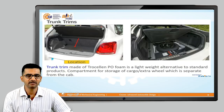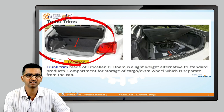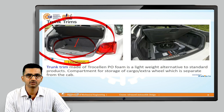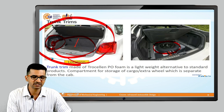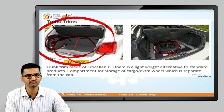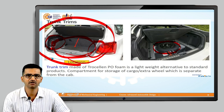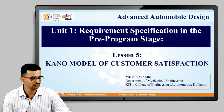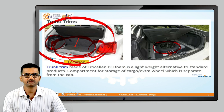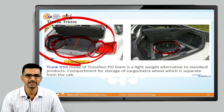Trunk trims cover the luggage opening area. There are plastic parts, a flat panel below which the spare tire sits, and provisions for a bulb, USB charger, or 120-volt supply. The flat panel is protected with rubber or fabric coating. This covers all the various interior trim components. In the next lesson, we will be discussing the Kano model. Thank you.